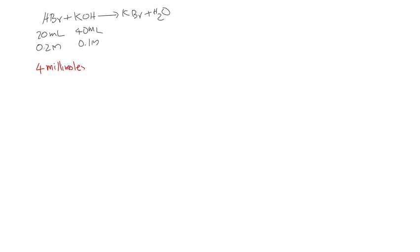And 40 milliliters 0.1 will be again 4 millimoles. That means both acid and base both are same number of moles. That means it is going to cancel each other, neutralize each other. So if it is neutral solution, the pH is going to be 7. We don't have to worry too much if it is same number of moles.